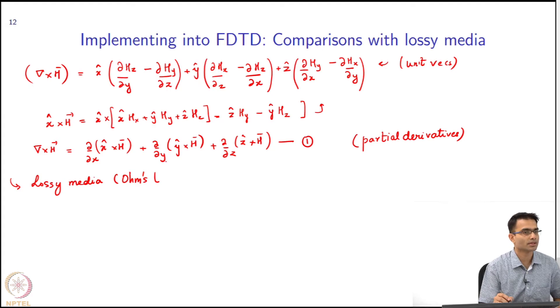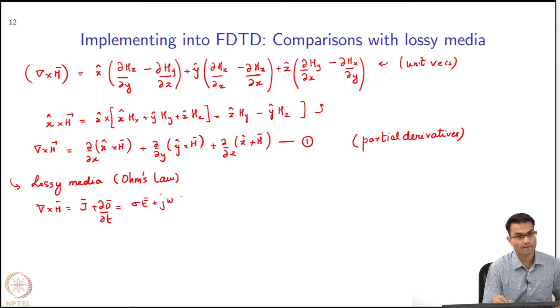Ohm's law is J = σE. Over there, what did I have? Curl of H gave me J plus dD/dt, and this became σE plus jωε_0ε_rE, which I rewrote - I can write this in terms of a complex permittivity.